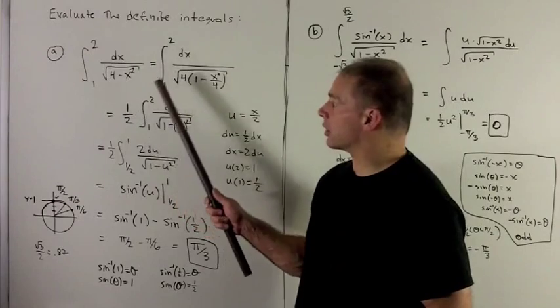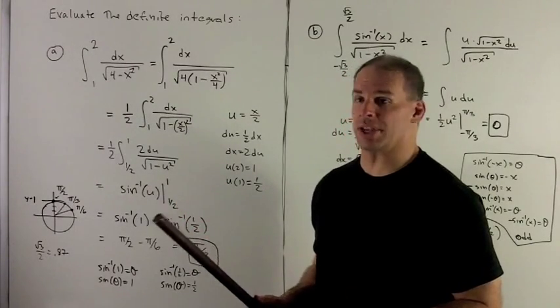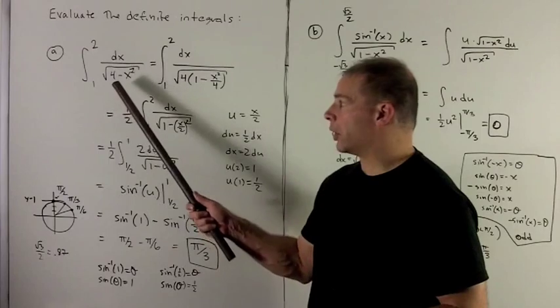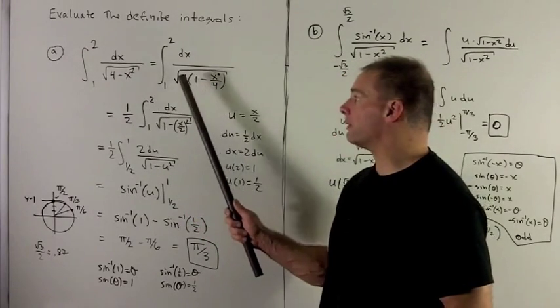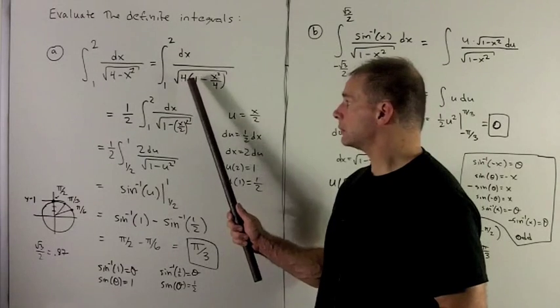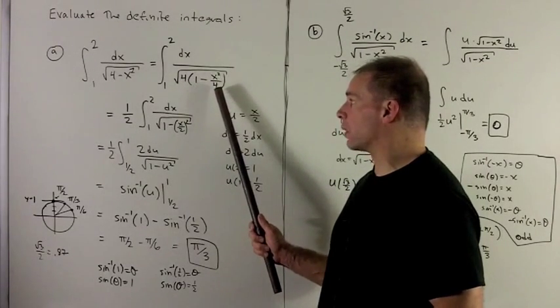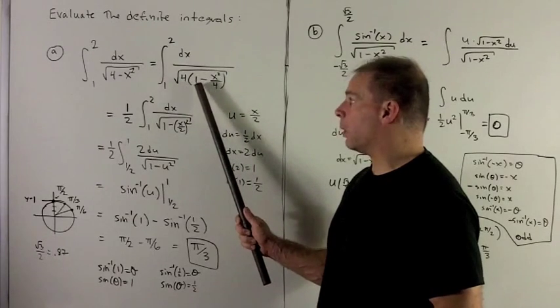If I look at this, it looks a lot like an inverse sine, but we have to clean some things up. So I notice I'd rather have a 1 there than a 4, so I'm going to factor a 4 out. It's going to take a 4 out of the x squared, so we divide by 4, and now I'm going to have my 1.